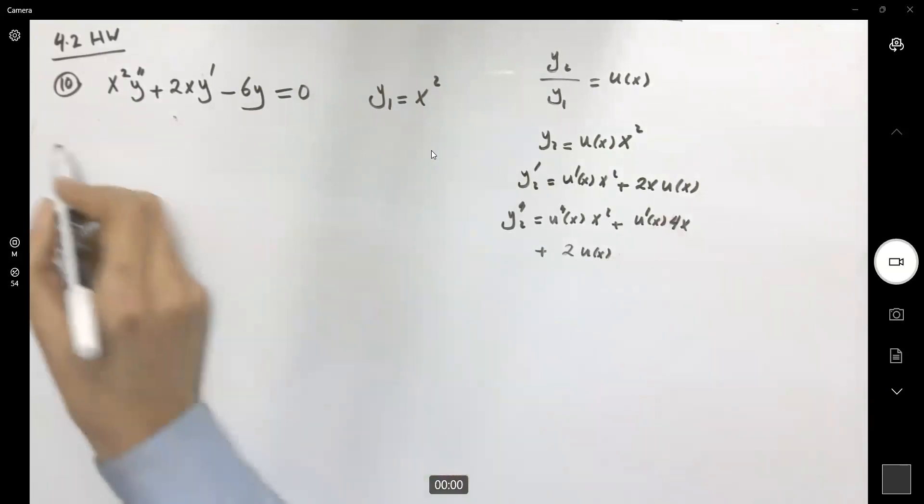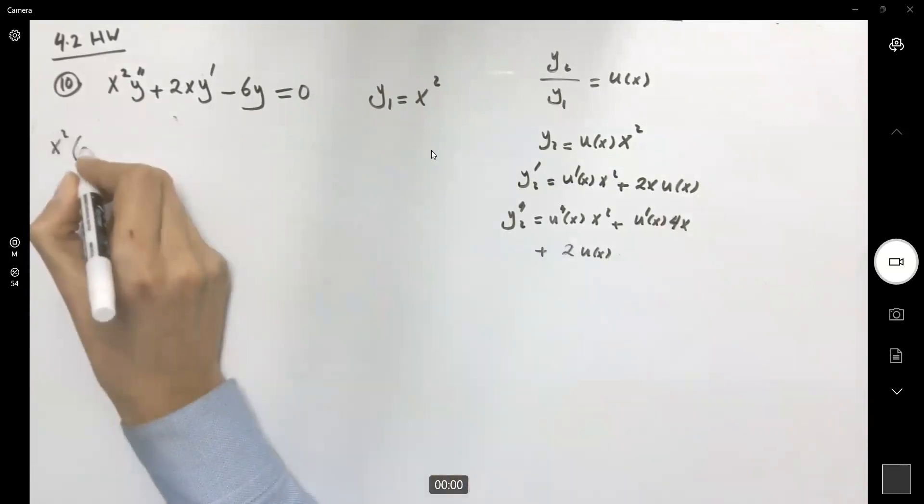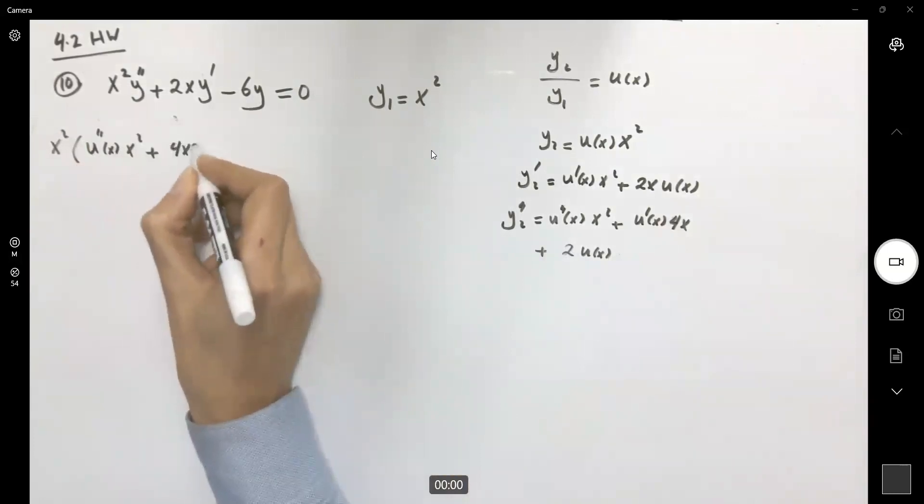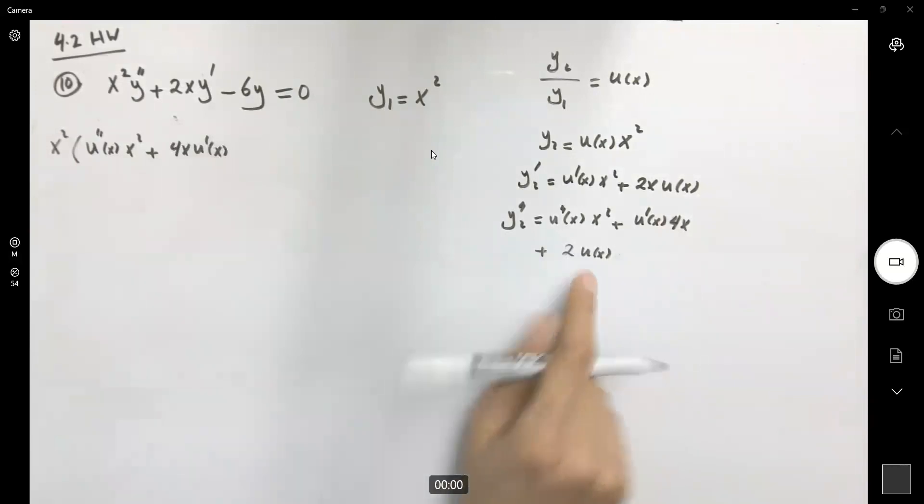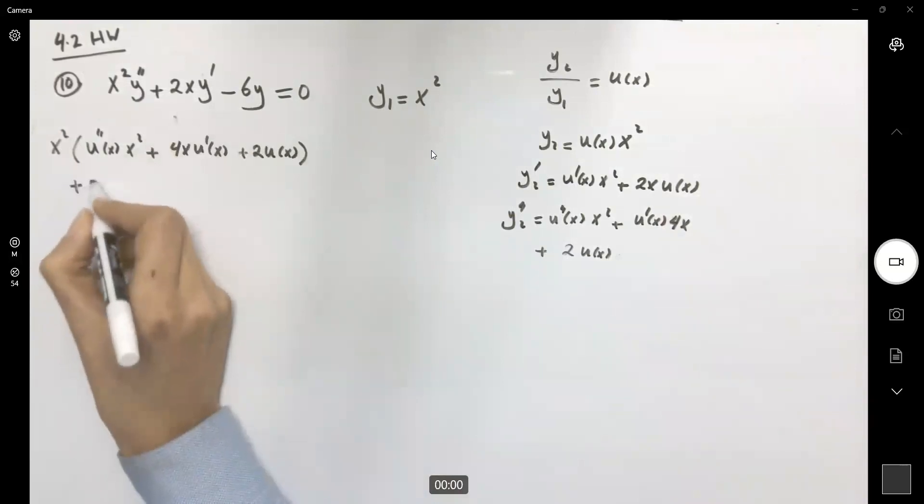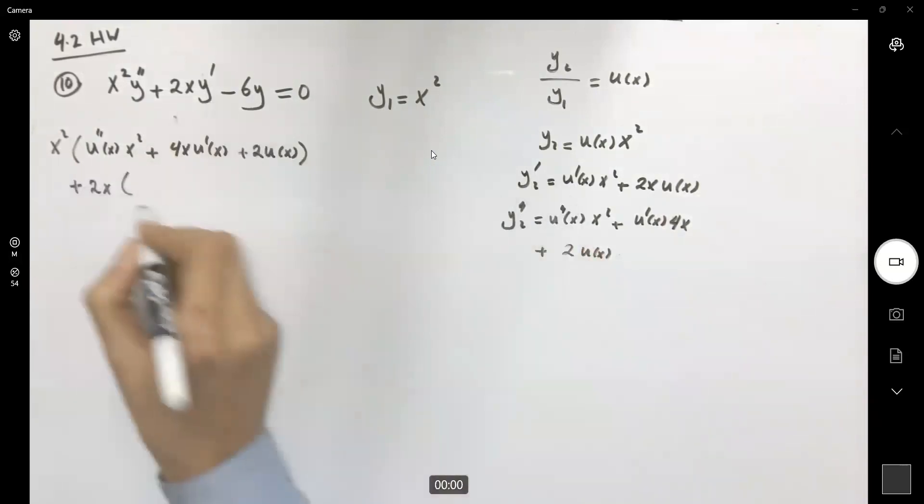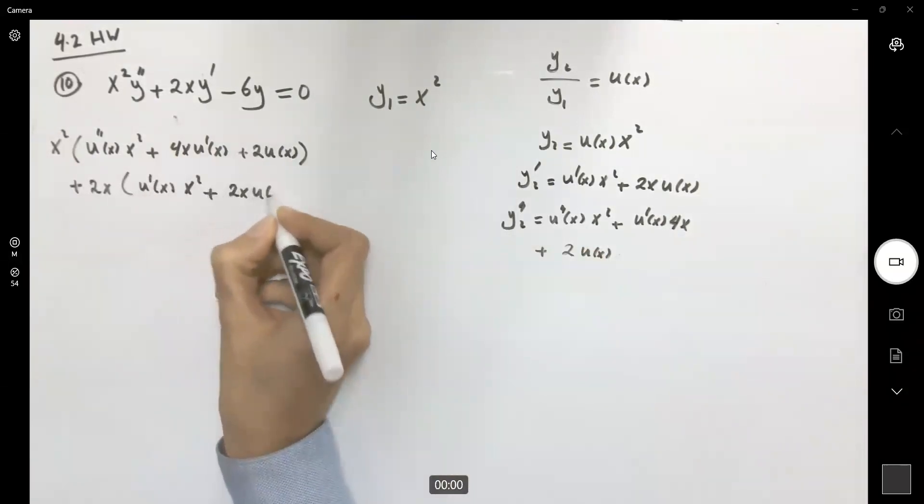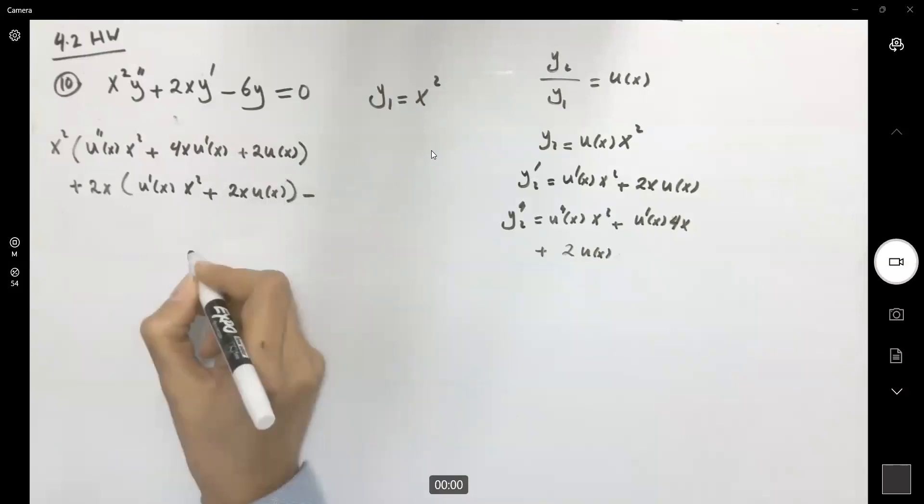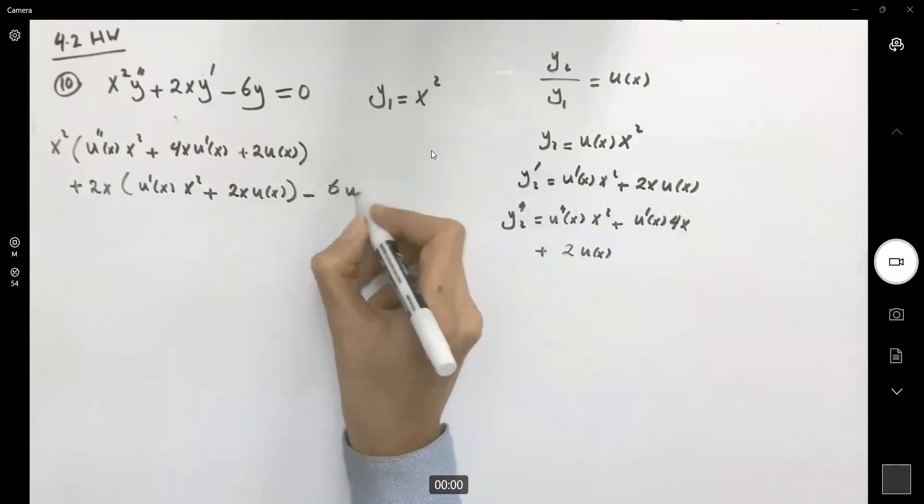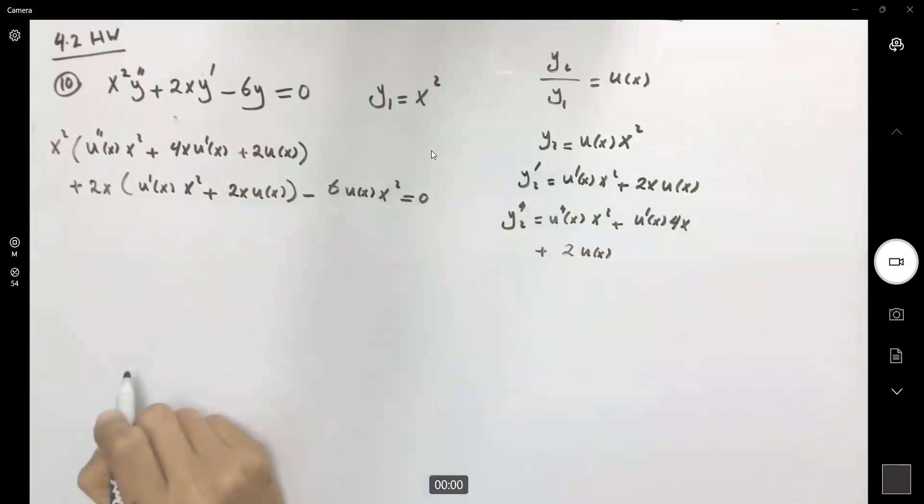Now let us do the substitution. Here we have x squared times the second derivative, which is u double prime x squared plus 4x u prime x plus 2u, plus 2x y prime. So y prime is equal to u prime x times x squared plus 2x u of x minus 6y, which is u of x times x squared. On the right hand side, we have a zero.